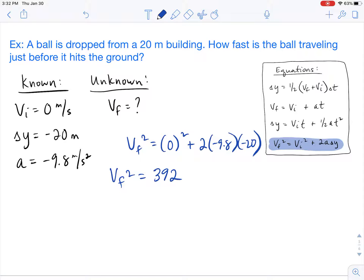We want VF all by itself. So to get rid of the square, we're going to square root. So the square root of 392 is 19.8 meters per second.